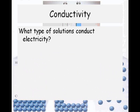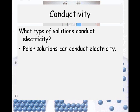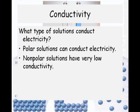Something new we're going to learn: in covalent compounds, we have polar covalent compounds, like we talked about earlier, and non-polar. Polar actually has a partial positive and a partial negative charge, so polar solutions can conduct electricity, and non-polar solutions are going to have very, very low conductivity — they're not going to conduct electricity very well.